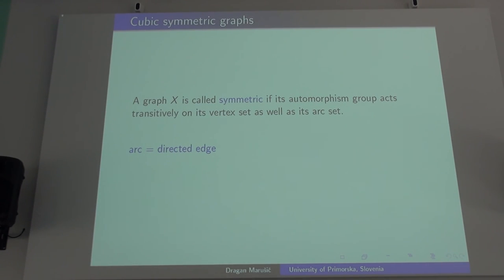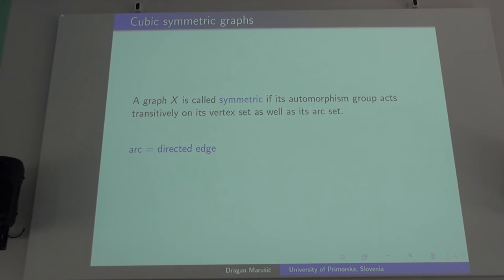I'm going to close with a couple more slides. In approaching the problem of starting with an even transitive group — what do you say about its two-closure, are all basic orbital graphs without odd automorphisms or not — we started with the smallest possible valency, because that gives at least the possibility to answer the question for all those transitive groups which have a suborbital of size 3. That is precisely the same as having an orbital graph which is a cubic symmetric graph. I'm going to tell you what we did here.